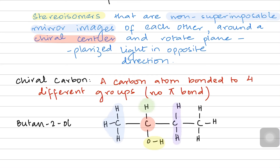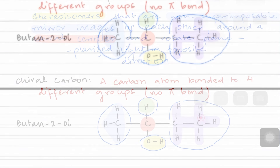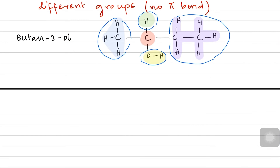On top there is a hydrogen, and on the right side there is C2H5 — two carbons and five hydrogens in total. So on the left there is CH3, on top there is a hydrogen, OH group at the bottom, and on the right side you will count the entire C2H5.